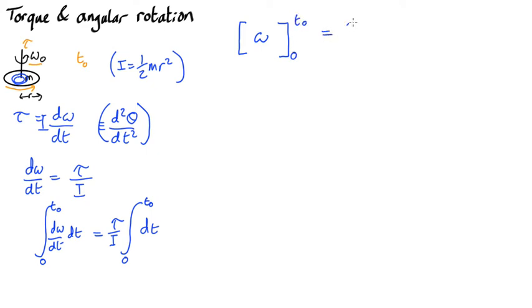just equal to tau over I, and that's just 1 times dt. Integral of 1 is t. So we get t from 0 to t0.